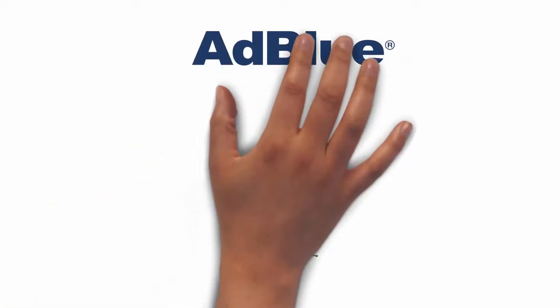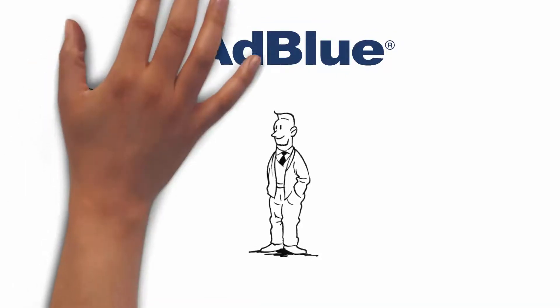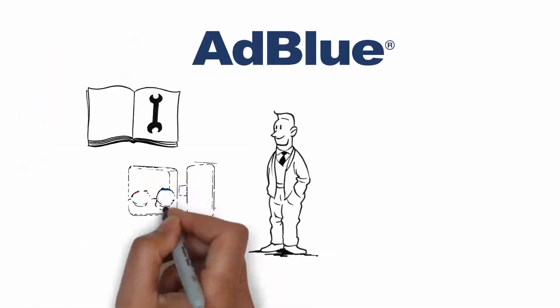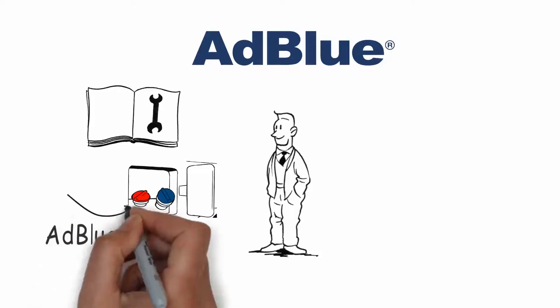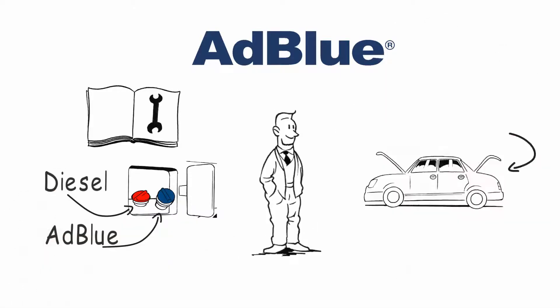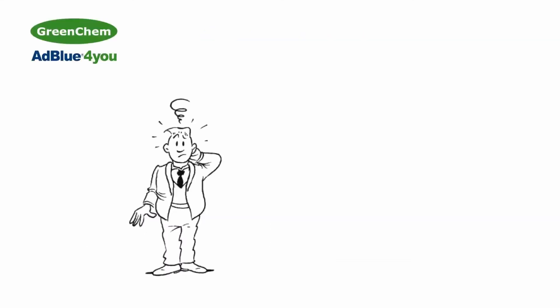First, find out where your AdBlue tank inlet is located. You can find this in your car's driver's manual. Most likely, the inlet is located near the diesel inlet or in the boot or under the bonnet of the car. Found it.